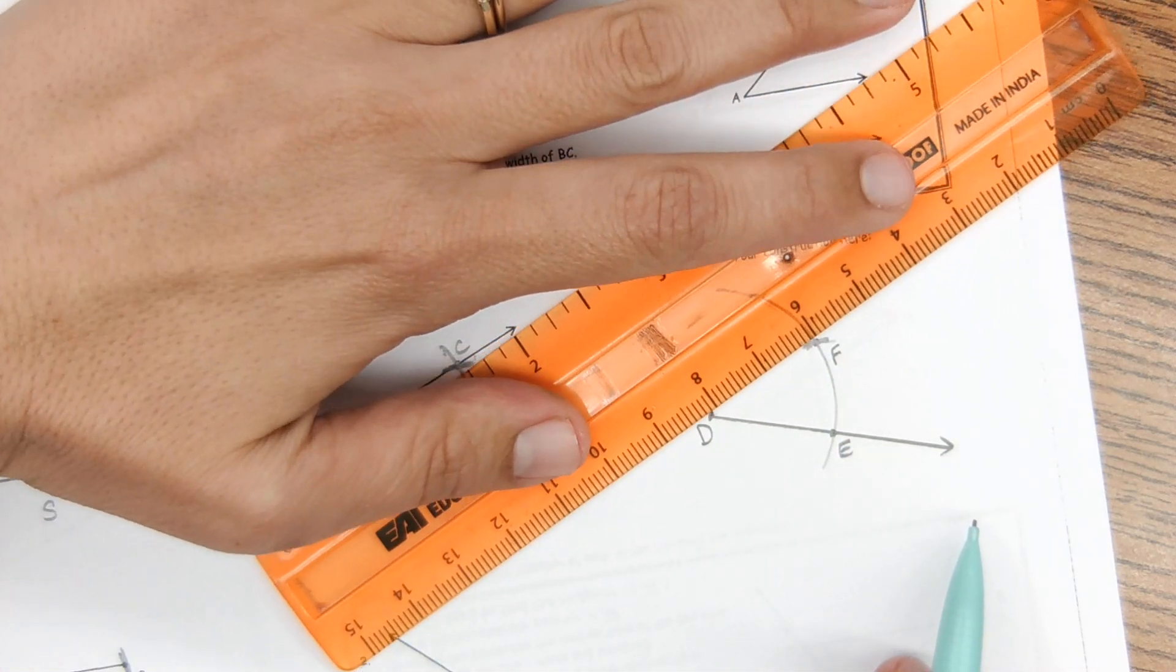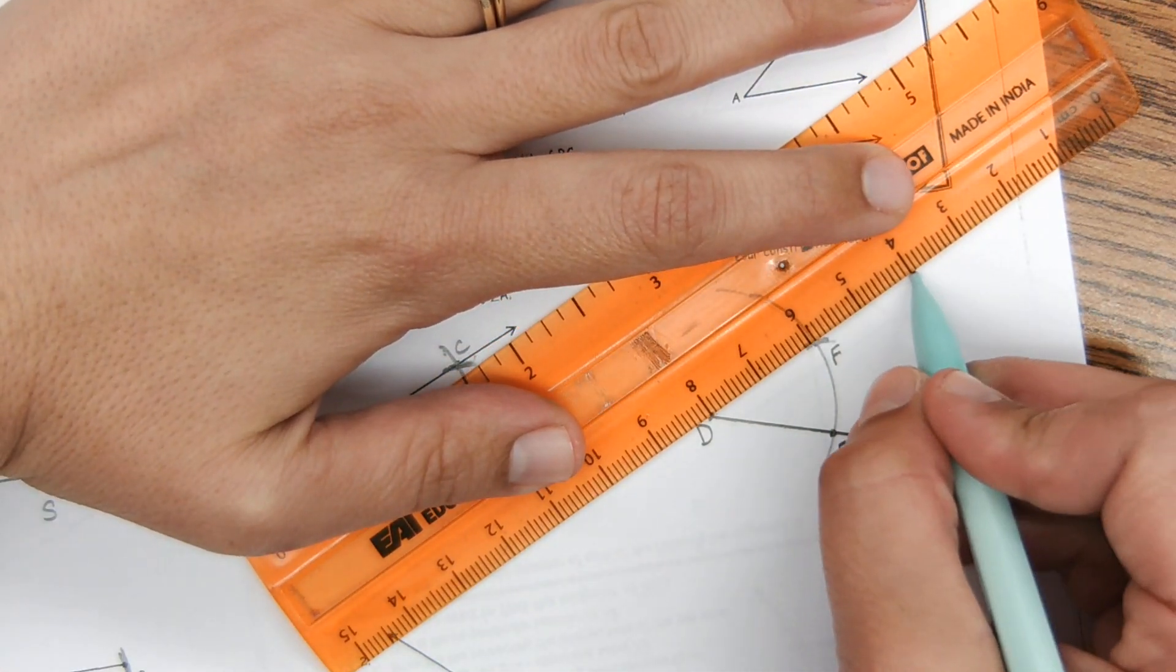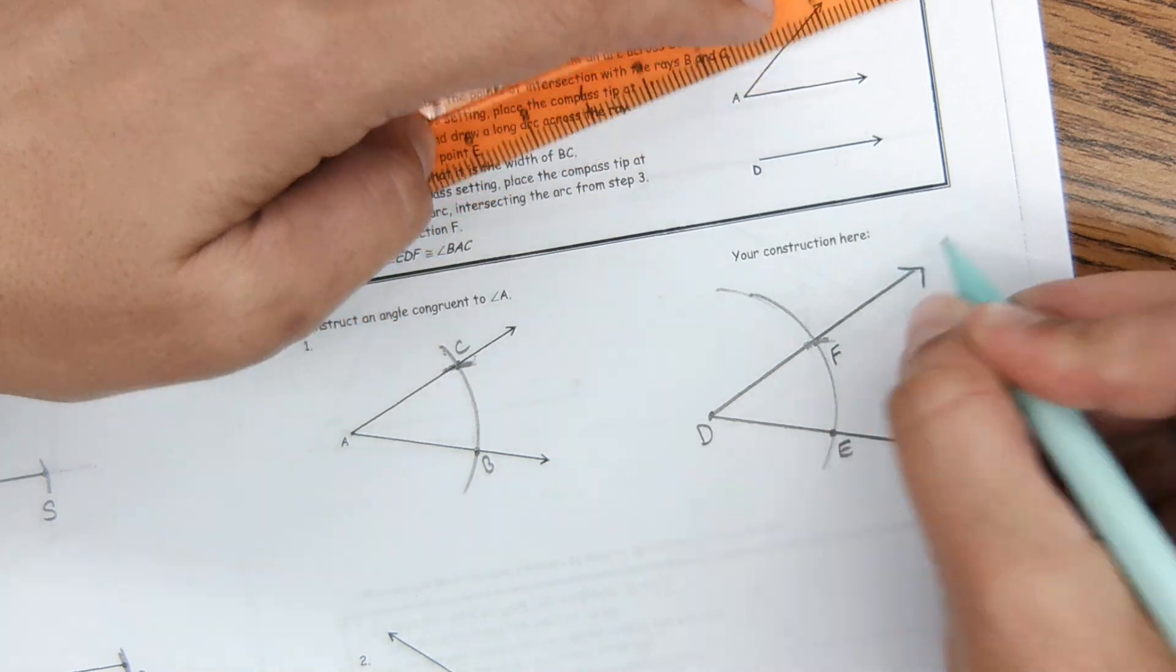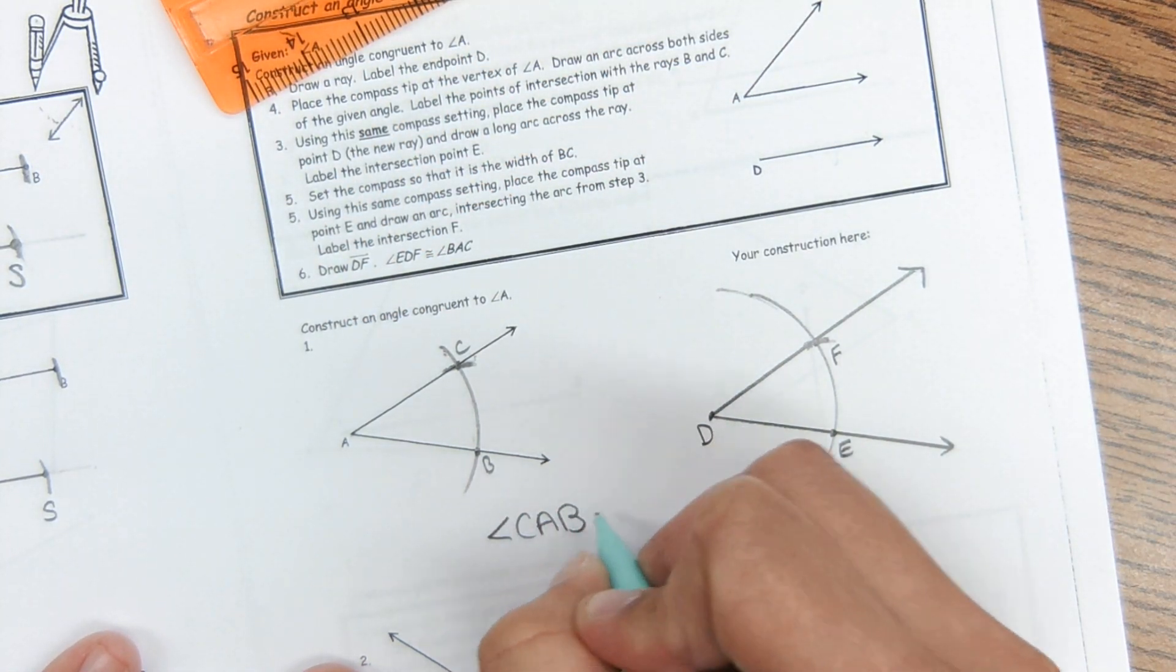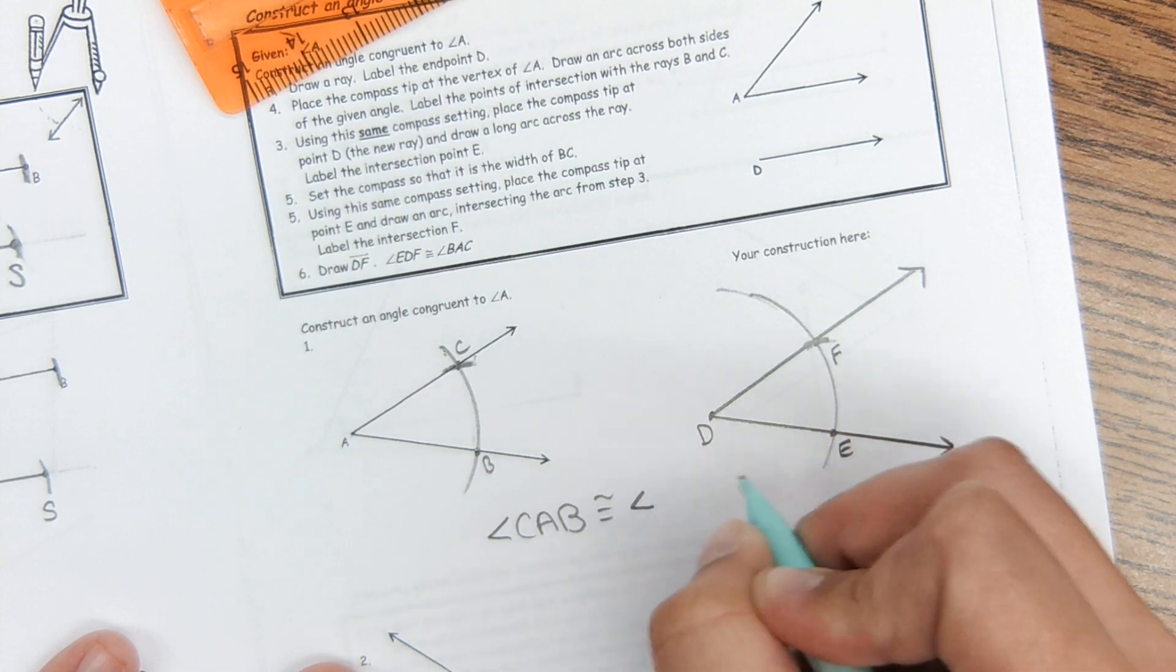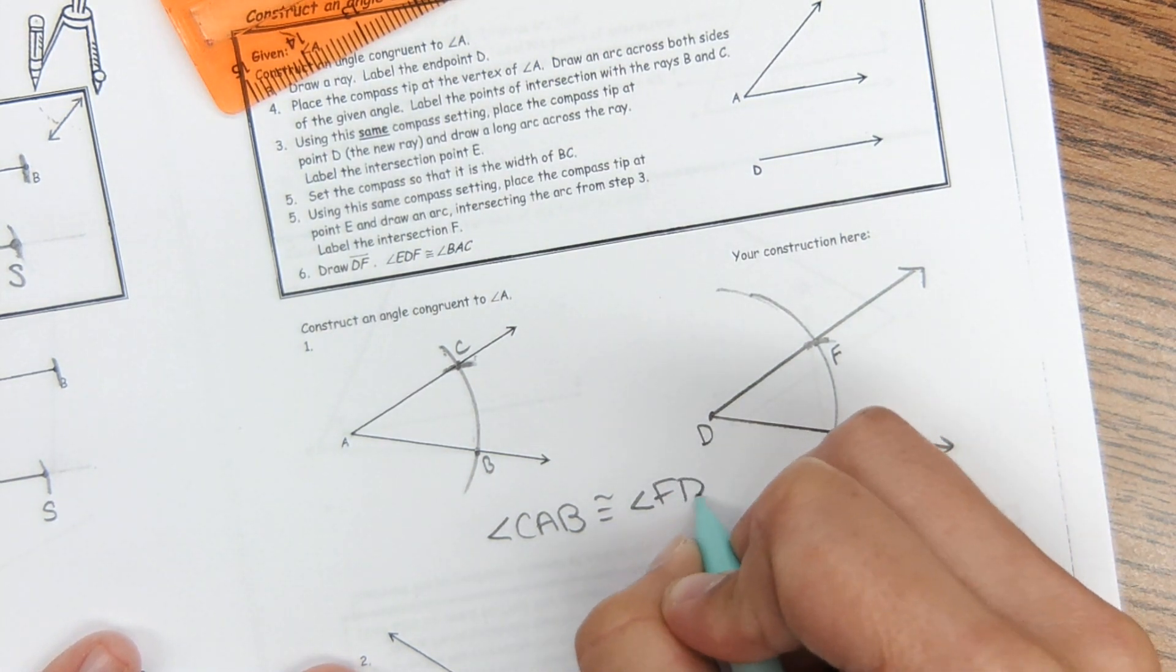And then as you may predict, I'm just going to connect those dots to make the second ray of the angle. So angle CAB is now congruent to angle FDE.